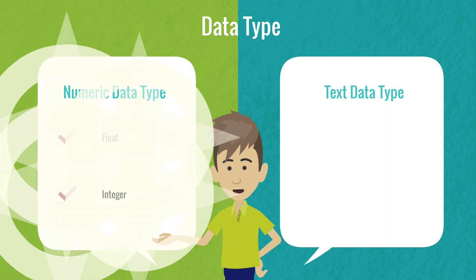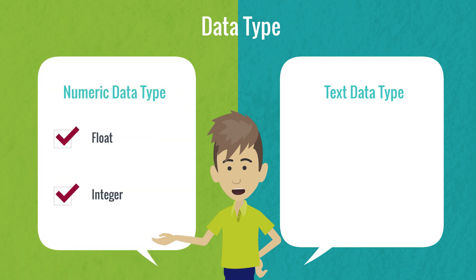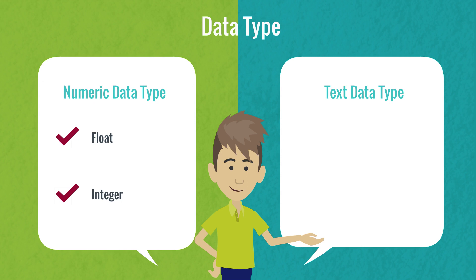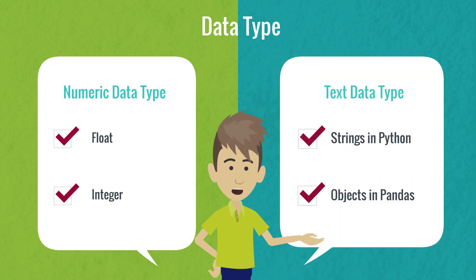Numeric data types include integers and floats. A floating point number, known as a float, has decimal points even if that decimal point value is zero. An integer will never have a decimal point. Text data type is known as strings in Python, or objects in Pandas. Strings can contain numbers and/or characters; however, strings that contain numbers cannot be used for mathematical operations.